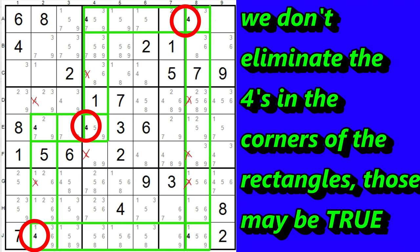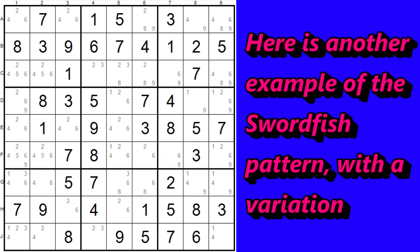We can also find the swordfish pattern by looking down the columns and then eliminating the number across each row. This is the converse of what I just did. Let's have a look at this example.